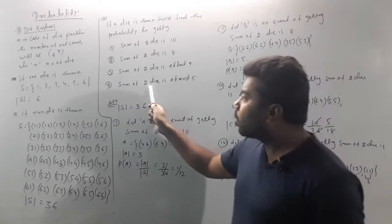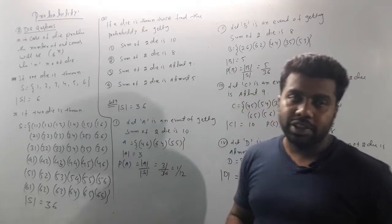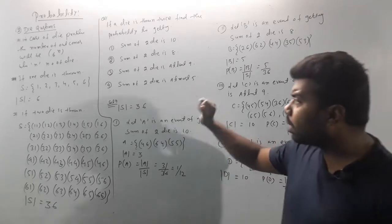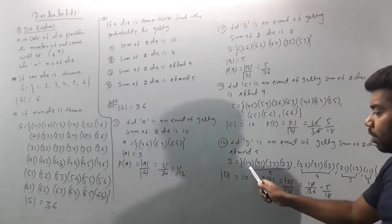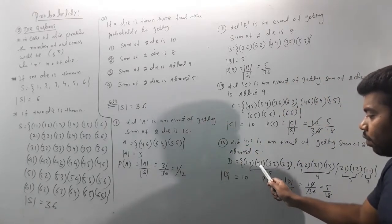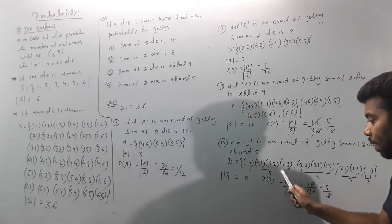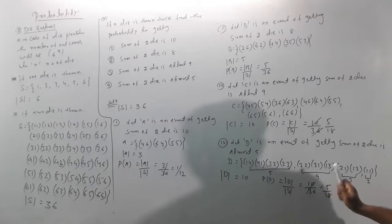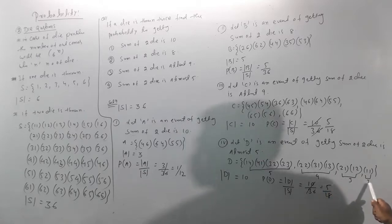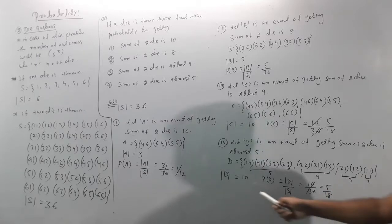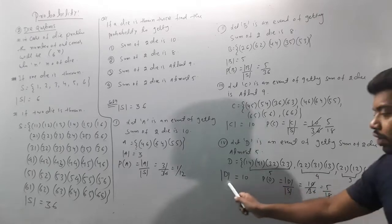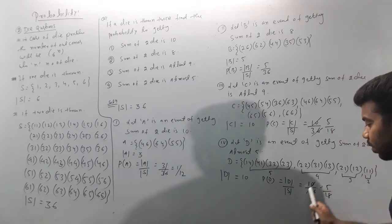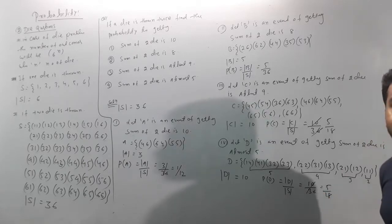Last: Let D be the event of getting a sum of at most 5. At most 5 means sums of 2, 3, 4, or 5. Sum 2: (1,1). Sum 3: (1,2),(2,1). Sum 4: (1,3),(2,2),(3,1). Sum 5: (1,4),(2,3),(3,2),(4,1). Total |D| = 10. P(D) = 10/36 = 5/18.